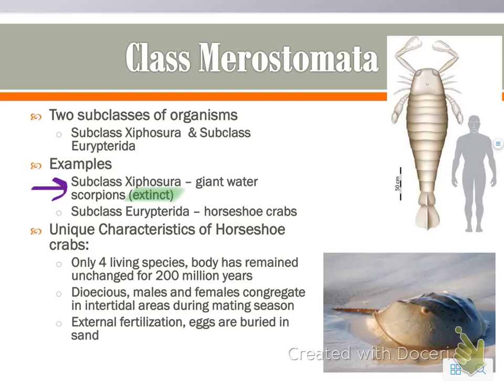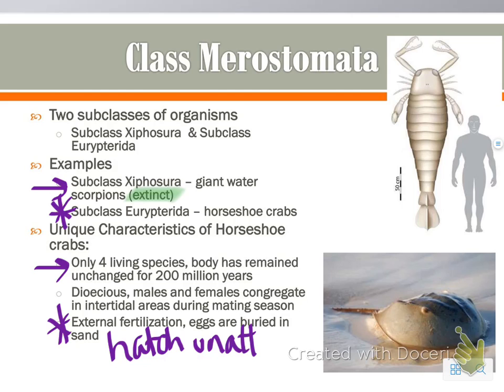What does exist is horseshoe crabs. We watched a documentary on those — they're a very archaic type of arthropod. As noted here, there are only four living species, but the body itself has remained unchanged for 200 million years. They have external fertilization, the eggs are buried in the sand, and they hatch unattended with no parental guidance in raising the offspring.